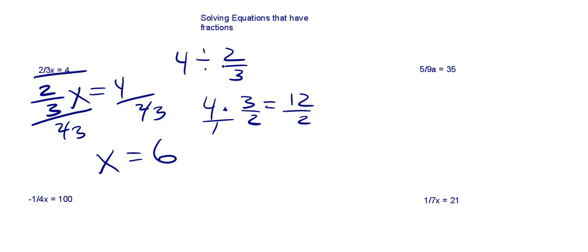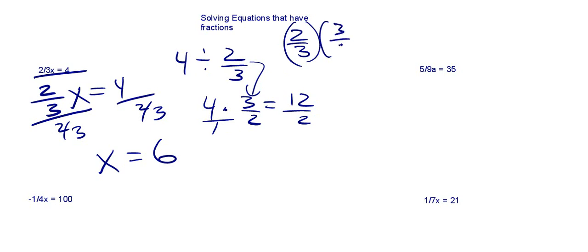And remember, when you're dividing fractions, you take the inverse and multiply — you take the reciprocal. The reciprocal of 2 thirds is 3 over 2, because when you multiply those together you get 1.